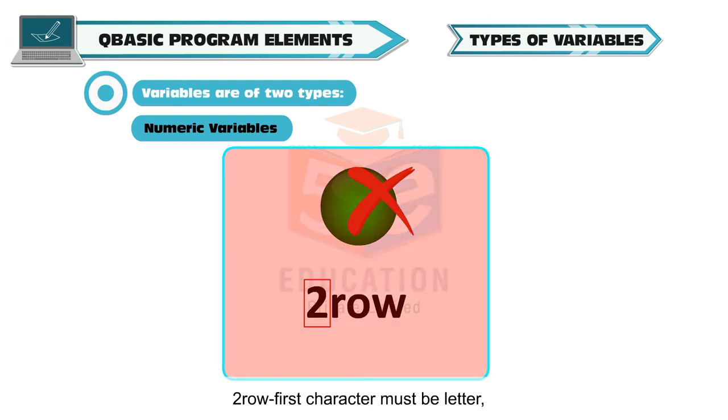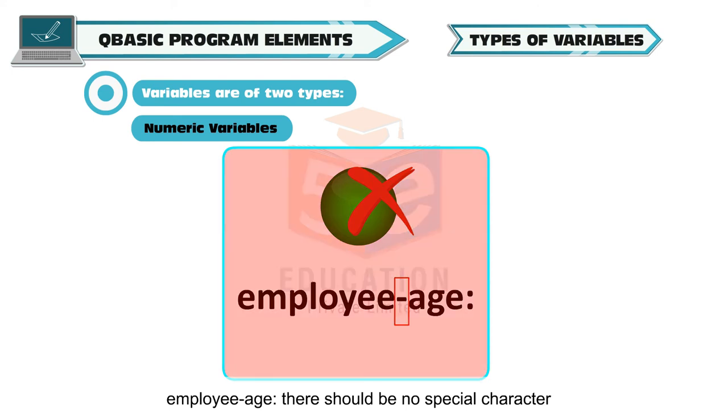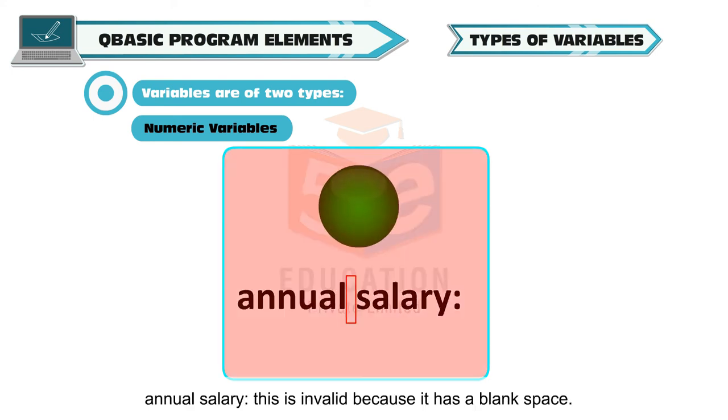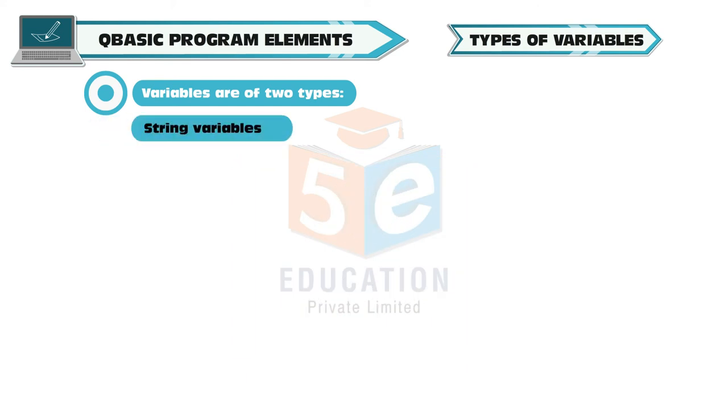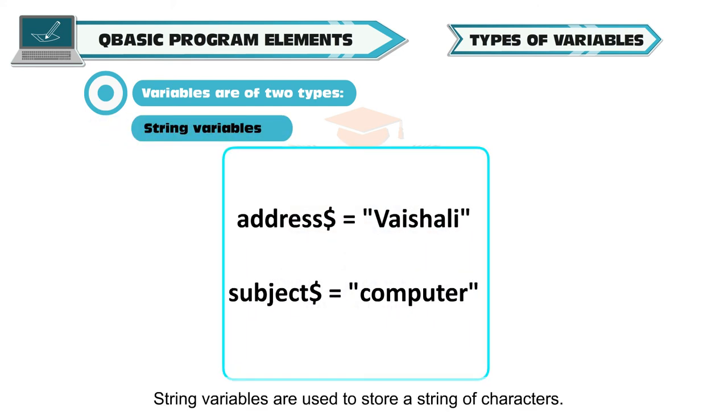Some invalid variable names are: 2 row, first character must be letter. Employee hyphen age, there should be no special character. Annual Space Salary, this is invalid because it has a blank space.